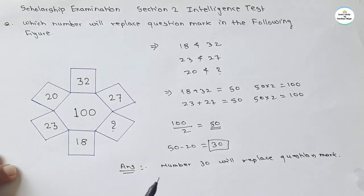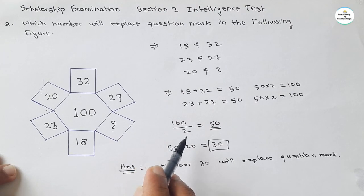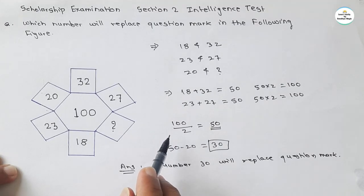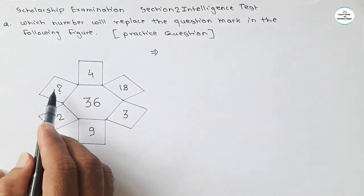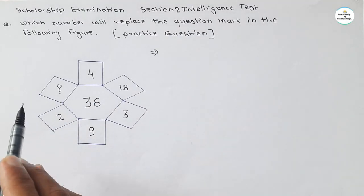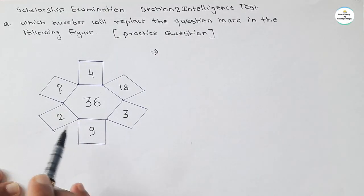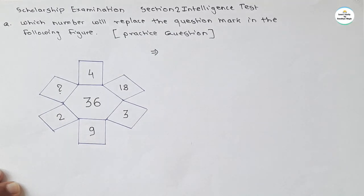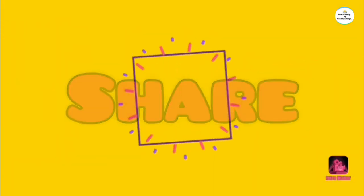I will give a practice question for you. Write your answer in the comment section and I will give a detailed explanation in the next video. In this practice figure there is a question mark along with other numbers — find the relation between the opposite numbers and the central number to get the answer. This is all for this video. We will meet again in the next video. Do learn, do enjoy. Thank you.